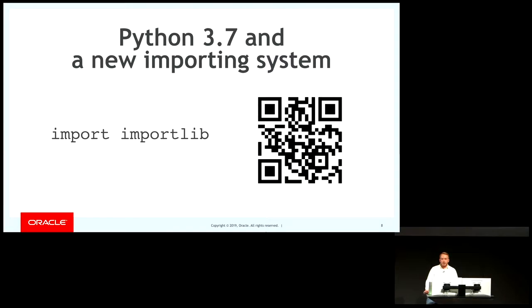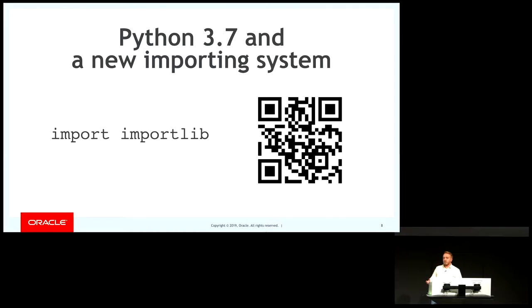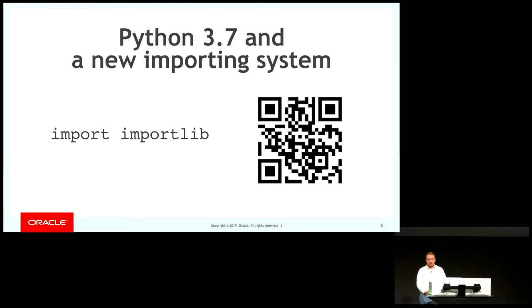If you're familiar with Python 3.7, the import system — the CPython implementation — has changed significantly. For development, nothing has changed much: you can still do 'import something from package'. But the import system changed internally. That's why, for instance, TensorFlow doesn't work with Python 3.7 — it just doesn't follow the new import system internally.